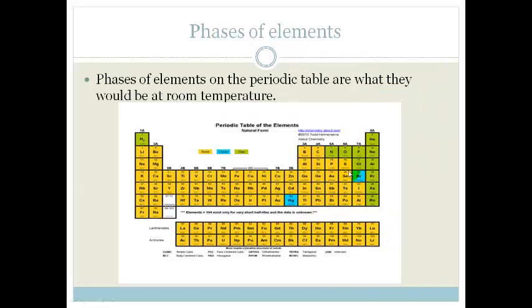Right, so now let's look at the phases of elements at room temperature. This is quite interesting because what you can see here is that all the metals, the semi-metals, and some of the non-metals are basically solid at room temperature. The only metal that is liquid at room temperature, which is very special, is mercury, which we use quite often.